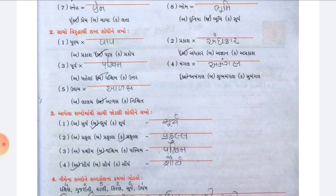Question 4, Part 2 — choose the correct opposite word and write it. Number 1: Punya — opposite is Ba: Paap, so Punya-Paap. Number 2: Prakash — opposite is Andhakaar. Number 3: Purv — opposite is Ba: Pashchim, so Purv-Pashchim. Number 4: Mangal — opposite is Amangal. Number 5: Udham — opposite is Ba: Adas, so opposite of Udham is Adas.